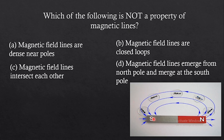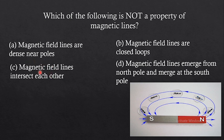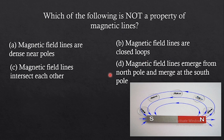Option C: magnetic field lines intersect each other — we cannot see any magnetic field lines intersecting in the figure, so this might be the wrong option. Option D: magnetic field lines emerge from the north pole and merge at the south pole — looking at the figure, they do start from the north pole and end at the south pole, so option D is correct. Therefore the only incorrect option is option C.